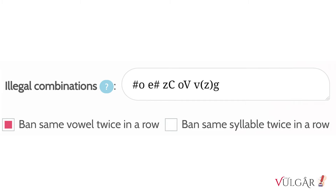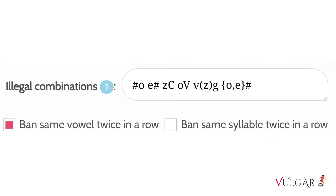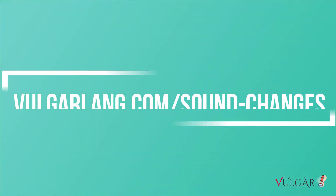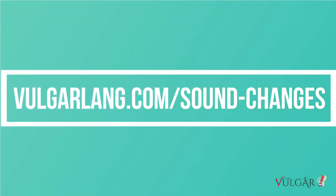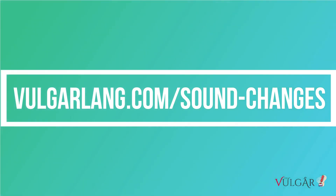Anything in round brackets is optional. Anything in curly brackets creates a set. This rule prevents O or E at the end of a word. Check out the sound change guide for a complete reference to this notation.